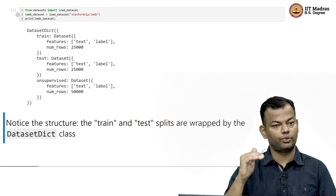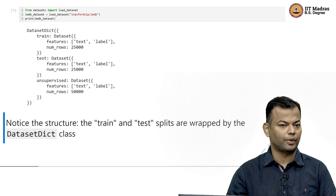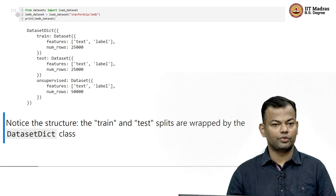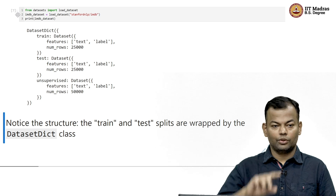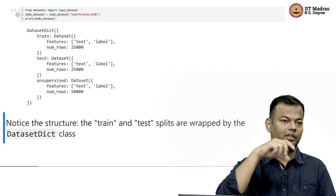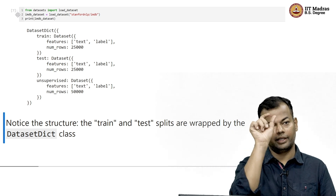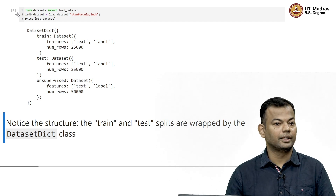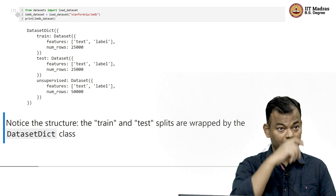The training dataset has 25,000 rows, the test dataset has 25,000 rows, and then there's an unsupervised split which I think is the unlabeled part — it has 50,000 rows, so these might just be reviews without any label. This train and test is wrapped up in a DatasetDict class — it's a dictionary structure where within that you have the dataset objects with the string key identifiers of train, test, and unsupervised. It looks fairly straightforward.